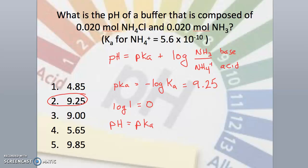Solving for pH, we get 9.25, or answer number 2. Notice that the weak base and conjugate acid are in equal molar amounts. The division equals 1, and the log of 1 is 0. So the pH is simply equal to the pKa, and this is a very important observation.